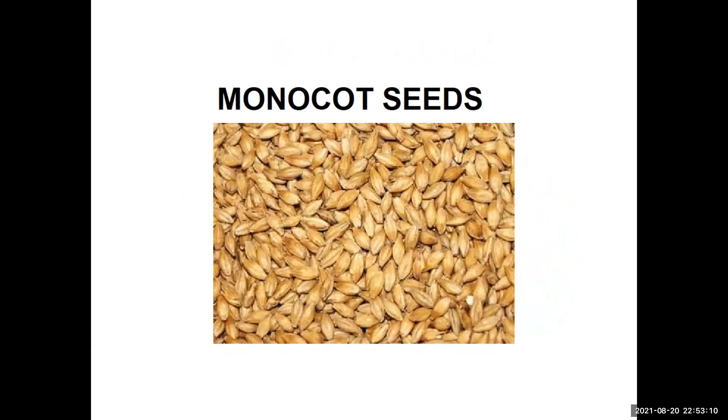Monocot seeds. Monocot plants, like maize and rice, have only one cotyledon. Such plants are called monocot plants.